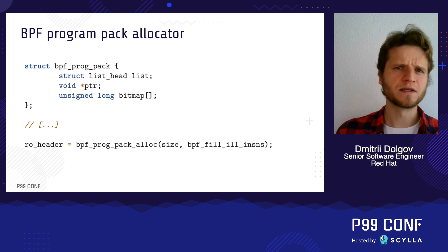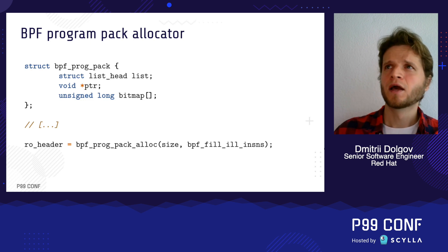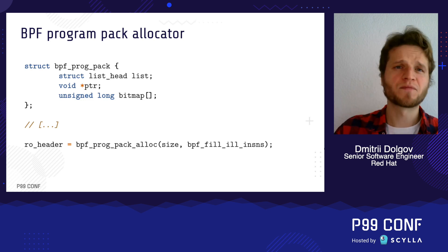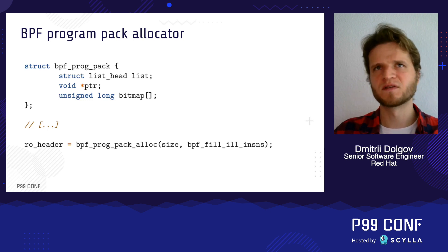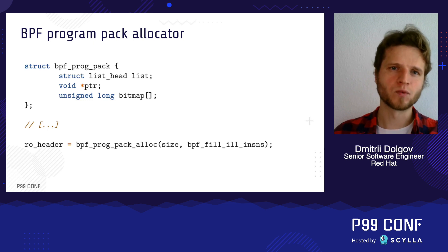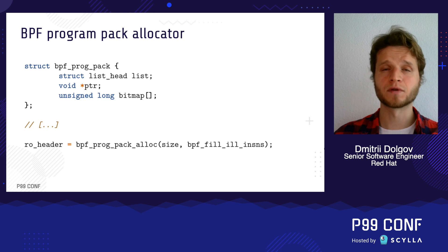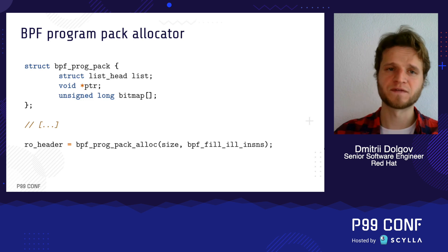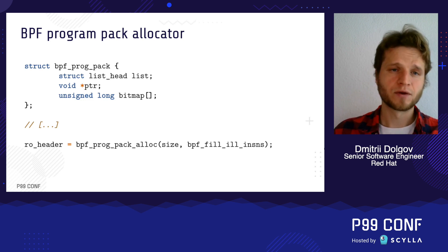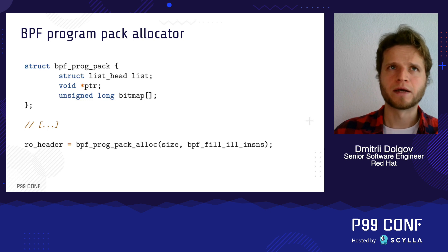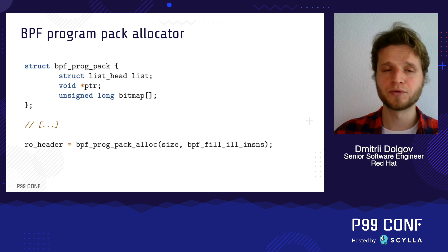Another very exciting thing is the program pack allocator, which takes the idea of improving BPF layout a little further. Before, BPF programs — even though they're quite often extremely small — had to reside on one page in memory, meaning one program per page, which is a bit of a waste. With a lot of BPF programs, you also introduce a lot of instruction TLB pressure. Nowadays the kernel tries to pack programs together on a single page, and sometimes even on a huge page. This happens transparently, so you may want to consider whether you have huge pages enabled on your system.